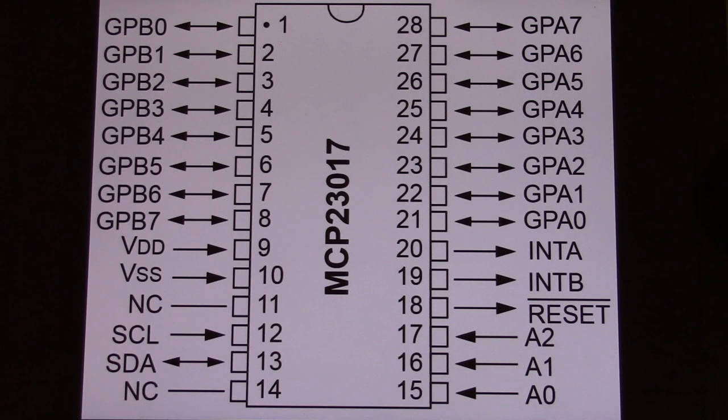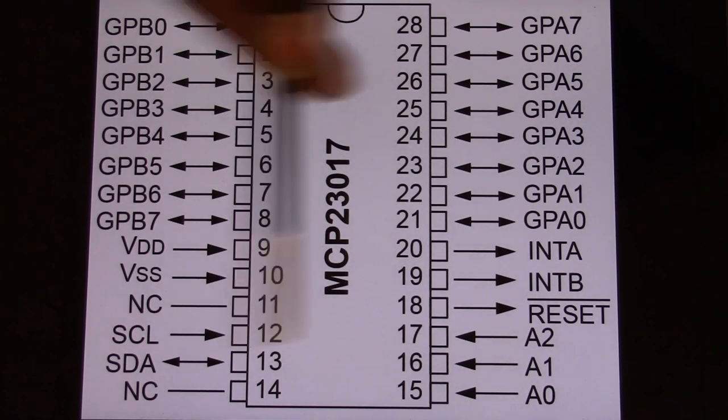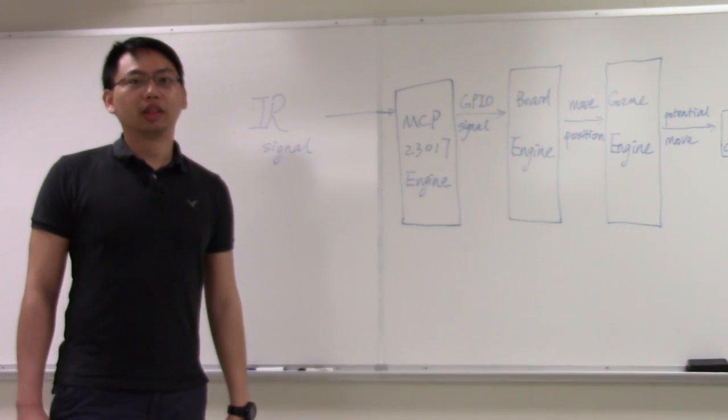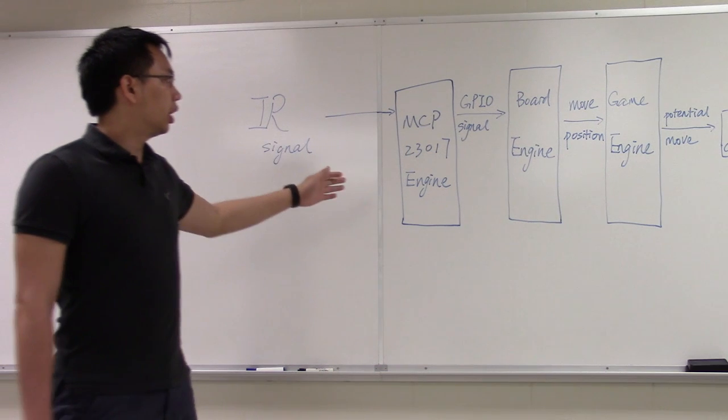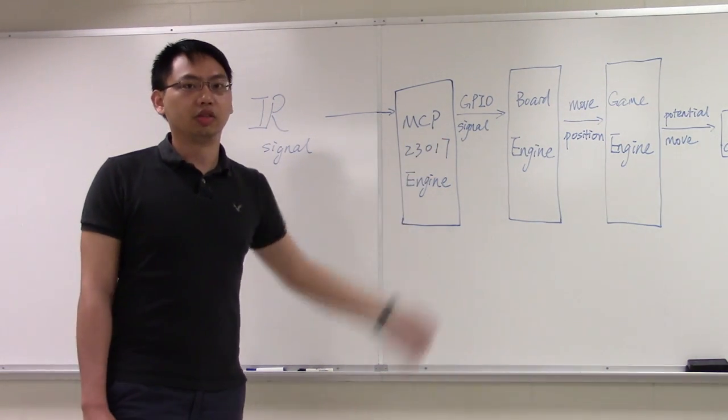To transfer data to and from the Raspberry Pi, pin 13 the data line is used. The software that controls the Raspberry Pi has a three-bit manager, MCP engine, board engine, and game engine.